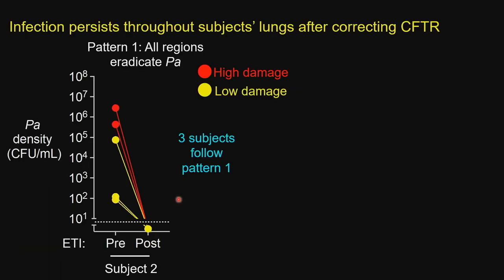Importantly, we used a new disposable bronchoscope to sample each region to reduce cross-contamination. We then repeated the bronchoscopy a year and a half after subjects started ETI. In all, we studied nine adults who had chronic Pseudomonas lung infections. I want to start by showing two general patterns of infection persistence that emerged from our data — here is an example of one single subject before and after ETI, with Pseudomonas density expressed as colony forming units per ml of recovered BAL fluid.